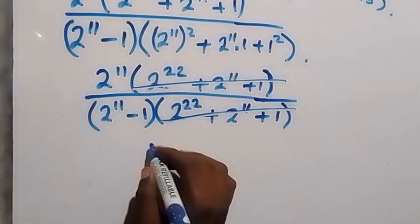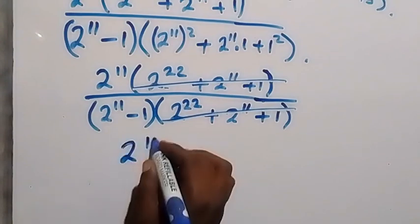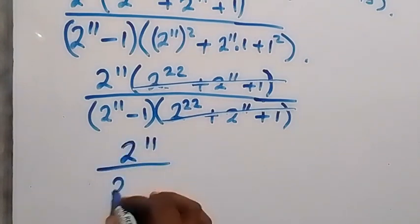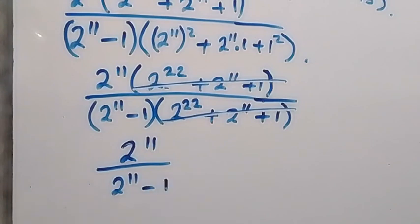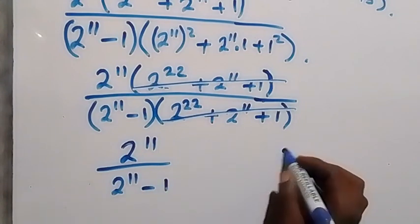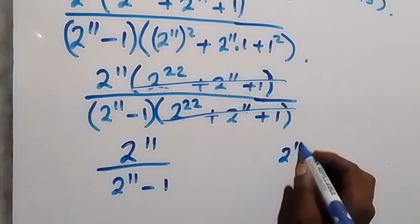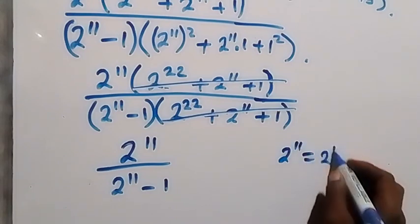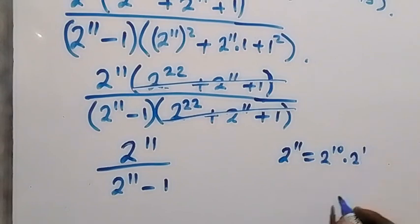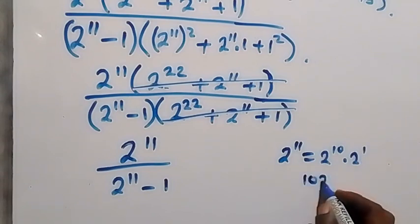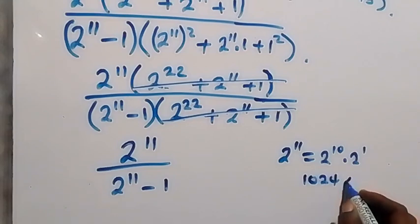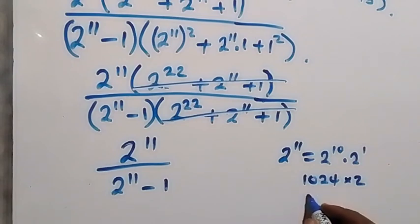From here we only have 2 raised to power 11 divided by 2 raised to power 11 minus 1 in the denominator. The 2 raised to power 11 we can write as 2 raised to power 10 times 2 raised to power 1. So 2 raised to power 10 is 1024, multiplied by 2 gives us 2048. So 2 raised to power 11 is 2048.